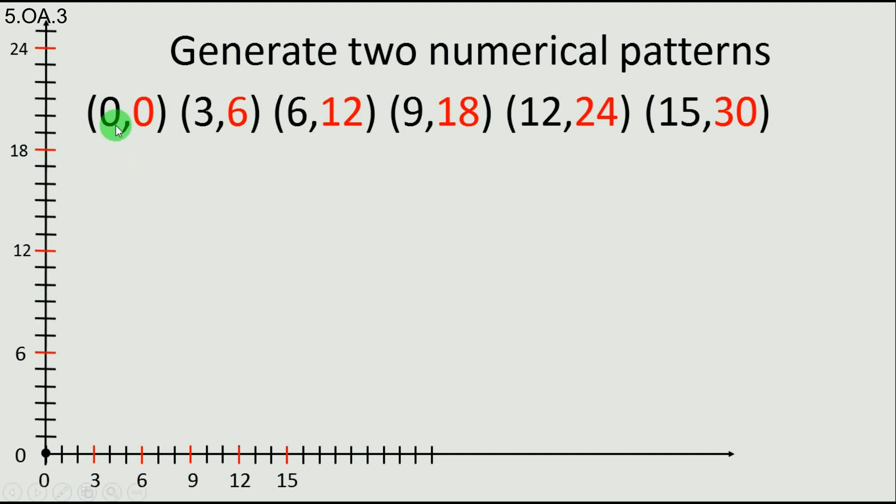Now for each pair, we make a dot. For example, the first pair, 0, 0, we make a dot at 0 and 0. For the second pair, 3, 6, we make a dot at 3 horizontally and 6 vertically. So we go 1, 2, 3 horizontally and 1, 2, 3, 4, 5, 6 vertically. And here is the dot.